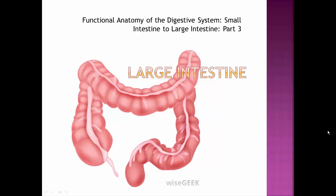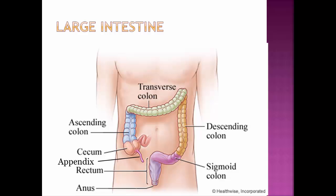In this video, we're going to continue our voyage down the digestive tract, looking at the very last part of the digestive tract, that is the large intestine. We've already looked at the mouth, the esophagus, the stomach, the small intestine, and the accessory organs of the pancreas, liver, and gallbladder. So now we're ready to look and see what happens in the large intestine.